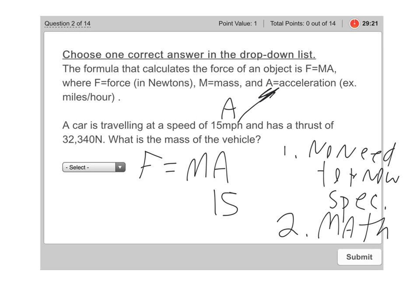And then we go back and look into the question and see what else do we have? Oh, we have 32,340 Newtons. So we're going to plug that into the formula, 32,340. And then the thing that we don't have is the mass.